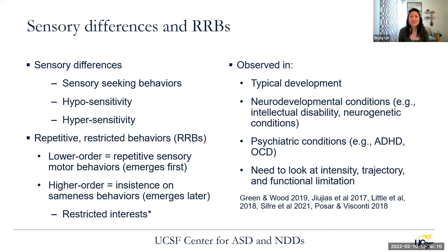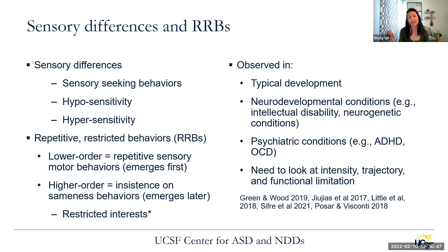Sensory differences and repetitive behaviors are seen across children, even neurotypical kids and across neuropsychiatric disorders. What we're looking for is differences in terms of intensity, trajectory, and functional limitation. You are seeing these behaviors more than in neurotypical kids in terms of frequency, intensity, and how interfering they are. If it's more interfering than a neurotypical kid or even a child with a psychiatric condition, then you should be thinking about ASD.